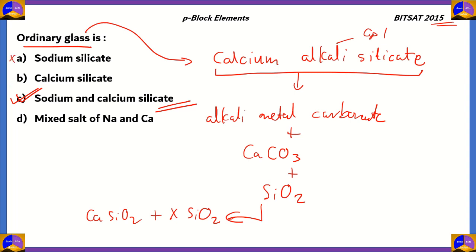If you were to write A alone, that means only sodium silicate will be present, which is incorrect. Option B would also be incorrect because it will be only calcium silicate. And option D, mixed salt of sodium and calcium, will be incorrect because calcium silicate by itself is not a mixed salt, and sodium silicate is also not a mixed salt. Mixed salt and compound salts refer to complex compounds. That's why option C, sodium and calcium silicate, is the right answer.